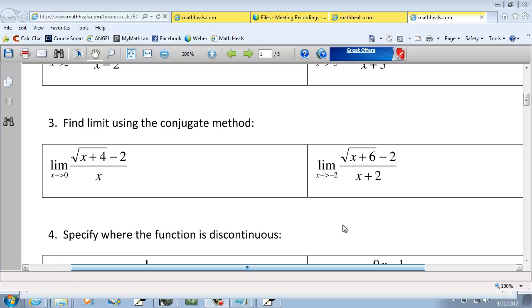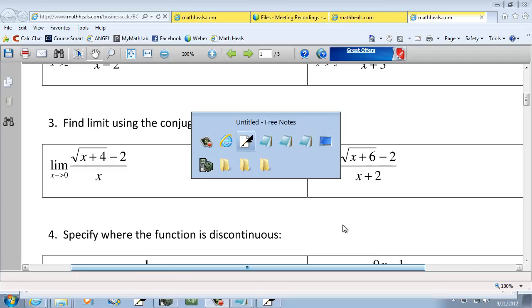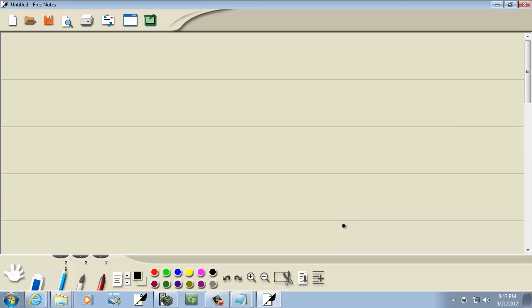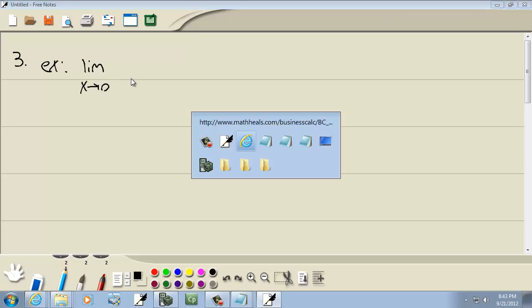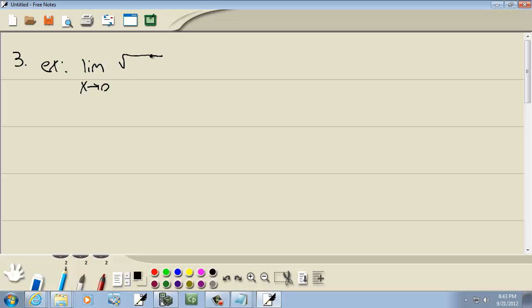Let's take a look at finding the limit using the conjugate method. So for our first example here, we have a limit as x goes to 0 of square root of x plus 4 minus 2 over x.